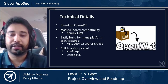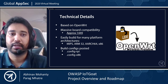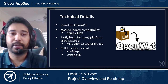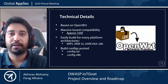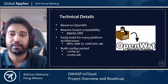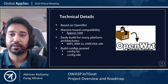IoT Goat is based on OpenWrt and this makes it compatible with over 1,400 circuit ports. It can be easily built for multiple platforms including MIPS, ARM, Arch, and it can even be built for x86 systems. The build configurations have already been developed and are readily available on the GitHub repository of the project.